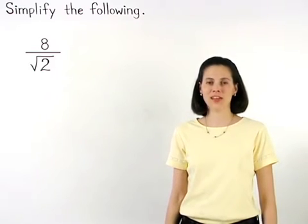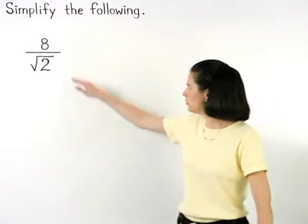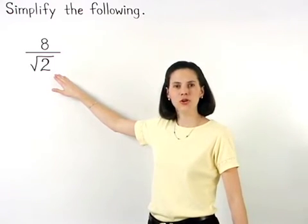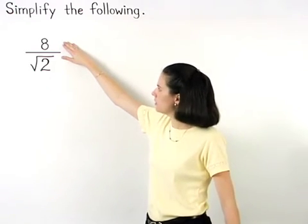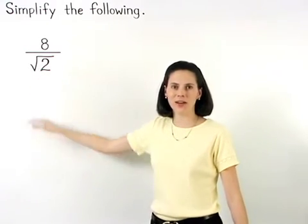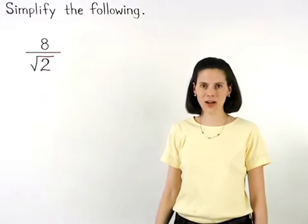In this example, the temptation is to divide 8 by 2 right away, but notice that the 8 is not inside a radical, and the 2 is inside a radical, so we cannot divide these numbers.